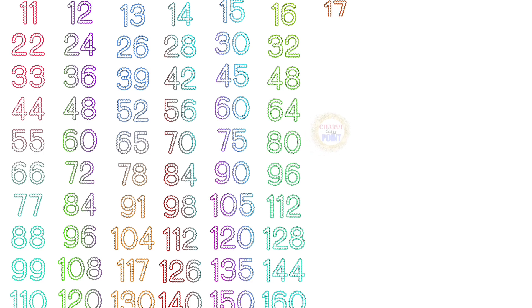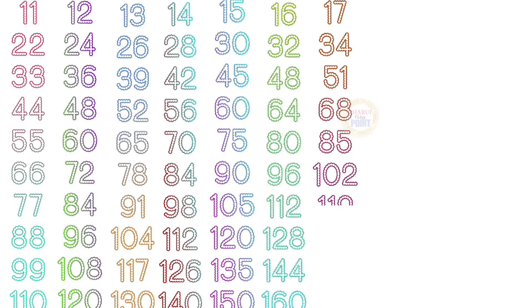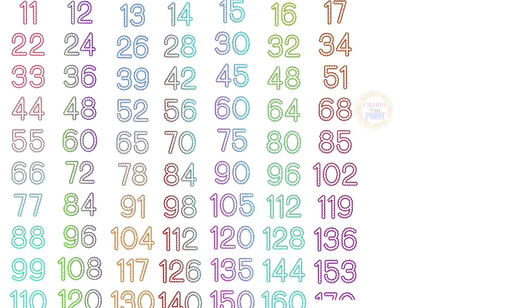Table of 17: 17×1=17, 17×2=34, 17×3=51, 17×4=68, 17×5=85, 17×6=102, 17×7=119, 17×8=136, 17×9=153, 17×10=170.